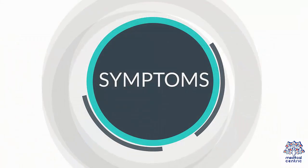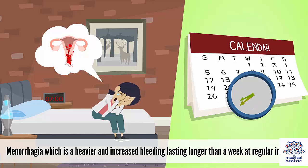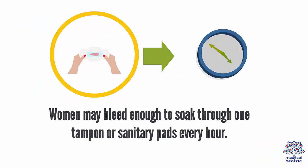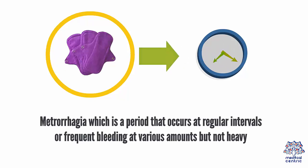Symptoms. Menorrhagia, which is a heavier and increased bleeding lasting longer than a week at regular intervals — women may bleed enough to soak through one tampon or sanitary pad every hour. Metrorrhagia, which is bleeding that occurs at irregular intervals or frequent bleeding at various amounts but not heavy.